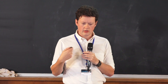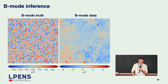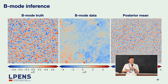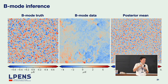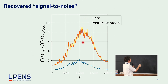Now the results. We have our true map — on validation data, not synthesized data, real independent simulations. We have our truth, our data, and we're able to reconstruct the posterior mean. If we briefly forget it's a posterior mean and just think of this as a foreground cleaning method, we can treat it as a point estimate and calculate the effective signal-to-noise of our reconstructed map compared to the initial data. We really do improve the signal-to-noise.